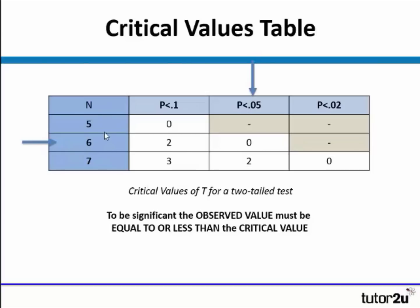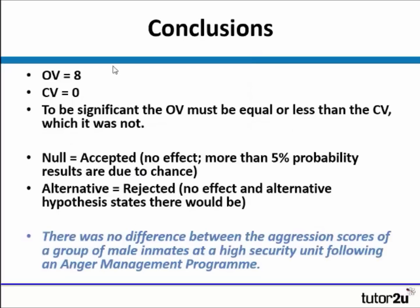With 6 participants, our score needs to be less than 0, and unfortunately 8 is not. So in conclusion, the observed value must be equal to or less than the critical value, which it clearly was not. We therefore accept our null hypothesis, as no effect was found, meaning there is more than a 5% probability that our results are due to chance. We reject the alternative hypothesis, and conclude that there was no difference between the aggression scores of the male inmates following the anger management program.